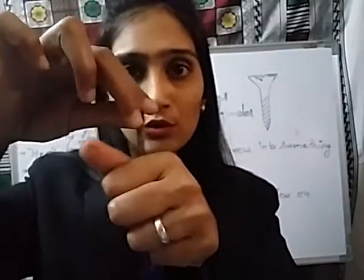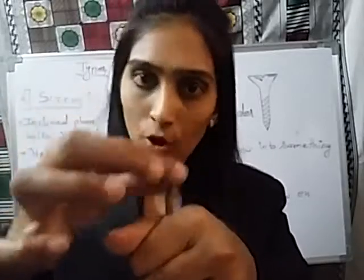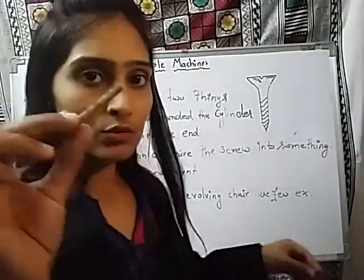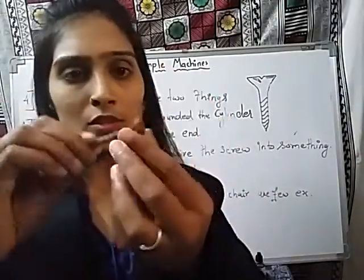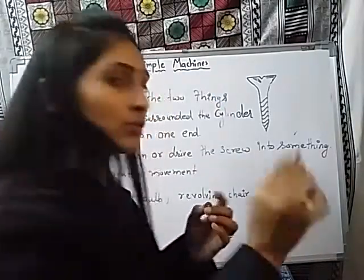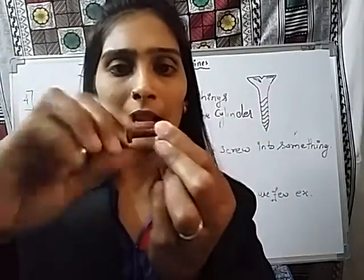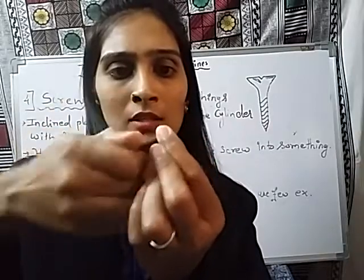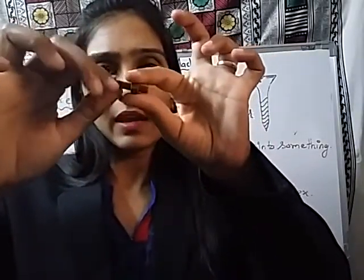For example, this screw can be fixed into this bolt, or this screw can be fixed into this bolt with the help of a nut and bolt. In this way we can fix two things together with the help of a screw.